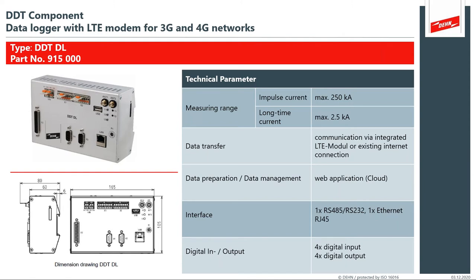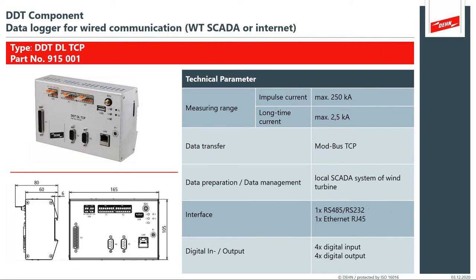The data logger is really the brain of the system. It captures the data and reports it back to the cloud application. It's a DIN rail mount requiring 24-volt power, so it would be installed inside the nacelle — probably in the control cabinet interface you already have. It's not taking up a tremendous amount of real estate, but it's providing this particular service. We also have versions wired specifically for SCADA or internet interface, but the data logger still performs these functions and is installed in the nacelle.